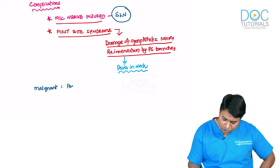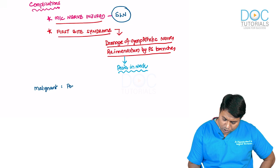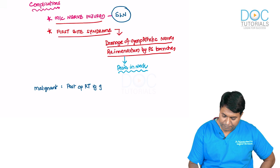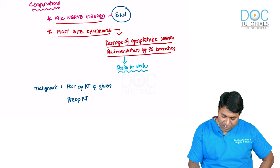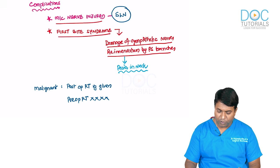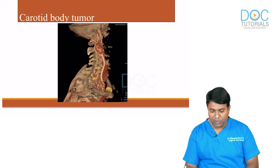Do not forget: most common nerve injured is the superior laryngeal nerve and first bite syndrome are the key complications. If the carotid body tumor is malignant, post-operative radiotherapy is given. Pre-operative radiotherapy has no value and is not given.